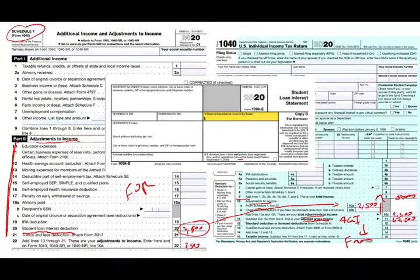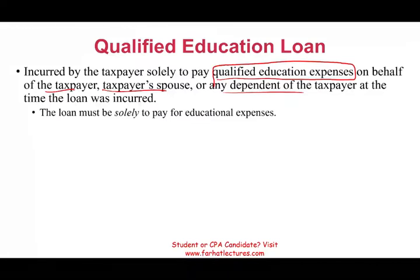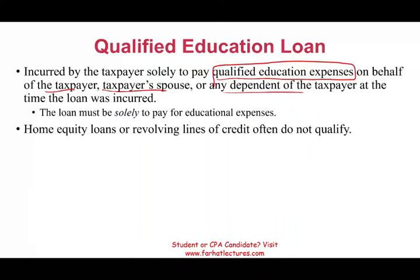Luckily for me, I'm no longer receiving this because I paid off my loan. So what is a qualified education loan? The loan has to be incurred by the taxpayer to pay qualified education expenses — on behalf of the taxpayer, the taxpayer's spouse, or any dependent at the time the loan was incurred. The loan must be for the sole purpose of educational expenses. If you took a home equity loan, a loan against your home, or used a revolving credit card, those don't qualify. If you use your credit card to pay college, that interest does not qualify as an educational loan.